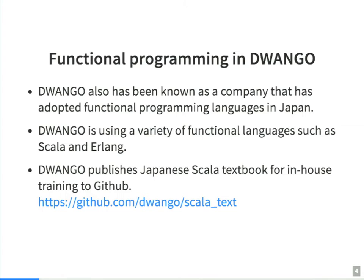Duango has also been known in Japan as a company that adopts functional programming languages, using a variety of functional programming languages such as Scala and Erlang. I joined Duango as a Scala specialist and wrote a Japanese Scala textbook for our training, which we published to GitHub.